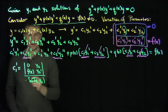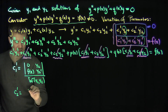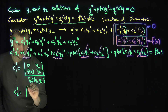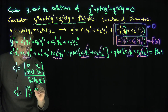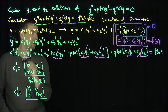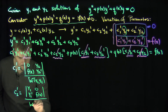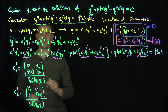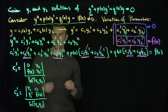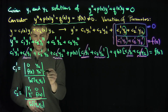Analogously, c2 prime is the determinant with first column y1 and y1 prime and second column 0 and f of x, all divided by the Wronskian of y1 and y2. So c2 prime is also easy to read off from Cramer's rule.